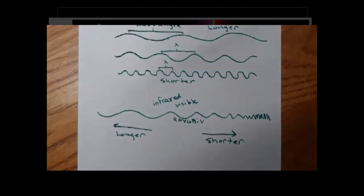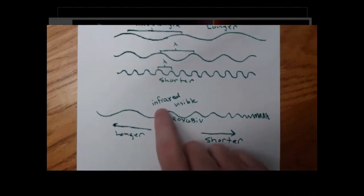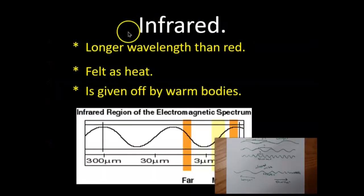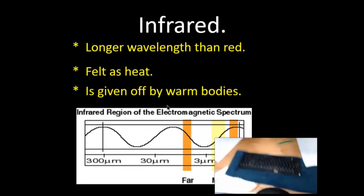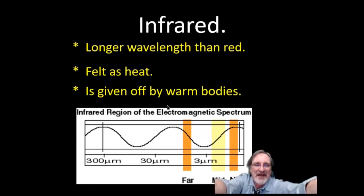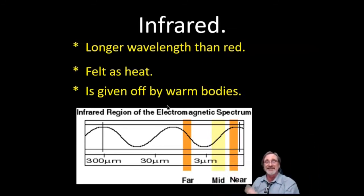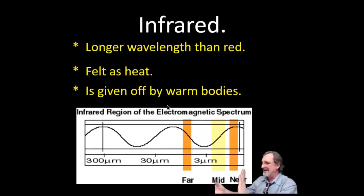So infrared is invisible, but actually you can feel it as heat. Infrared, it's longer wavelength than red, it's felt as heat, it's given off by warm bodies. Bodies means any kind of physical object. If you're standing next to a barbecue, you can't see it, it's not glowing or anything. If it was hot enough it would glow red hot, but it's not. But you can feel the heat coming off it, not touching it, but you put your hand near it and you can feel that heat. That would be infrared that you're feeling.